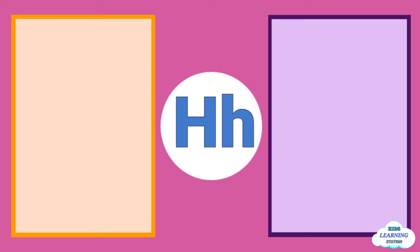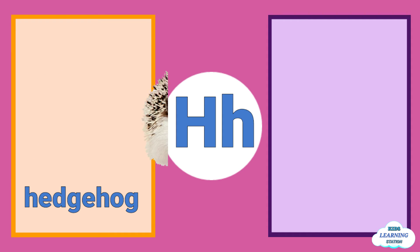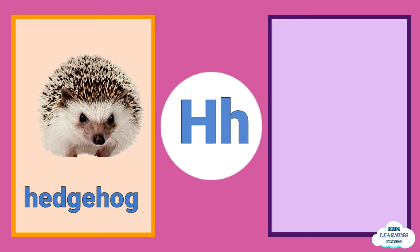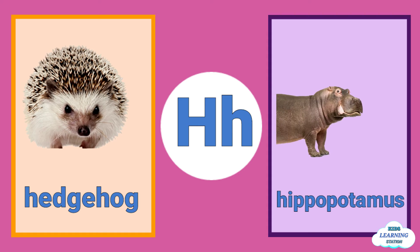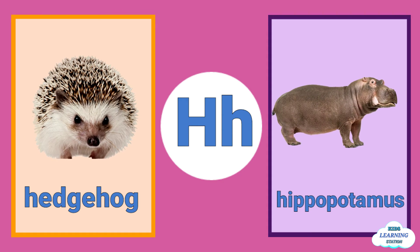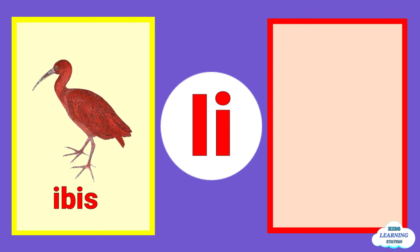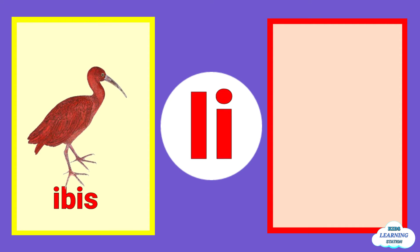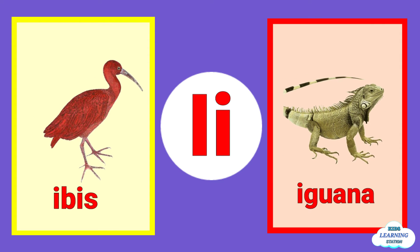H is for hedgehog. H is for hippopotamus. I is for ibis. I is for iguana.